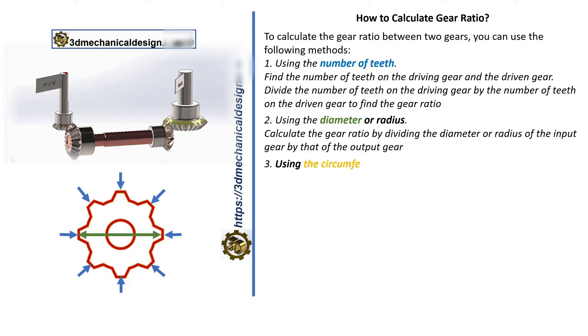Third, using the circumference: Calculate the gear ratio by dividing the circumference of the input gear by that of the output gear.